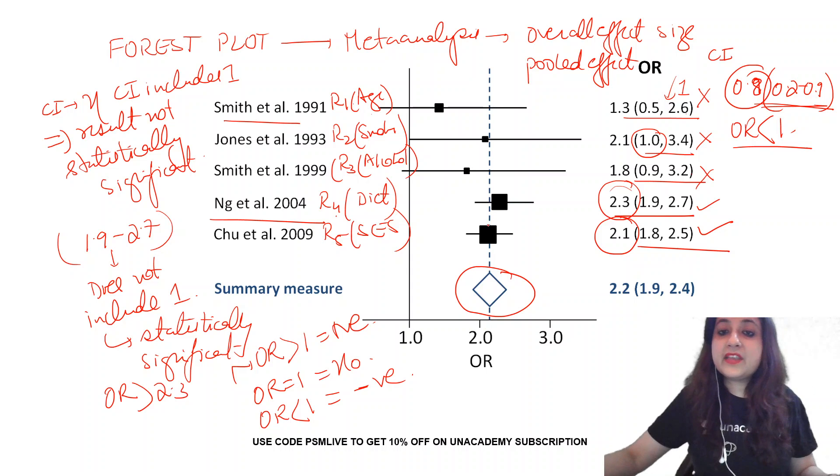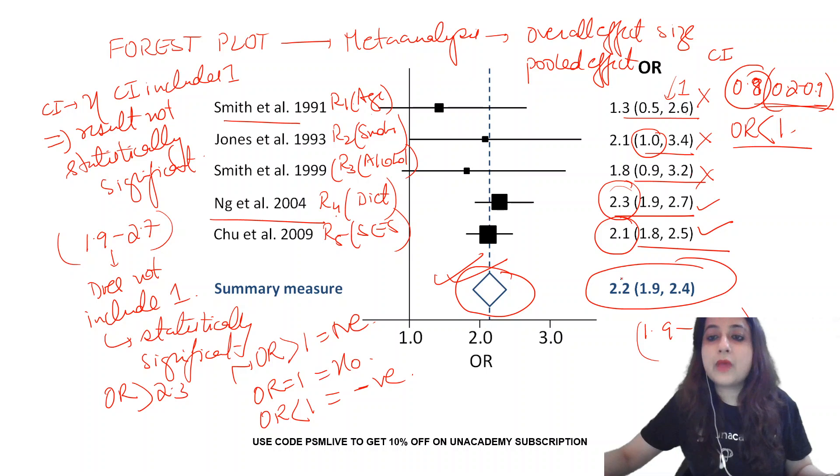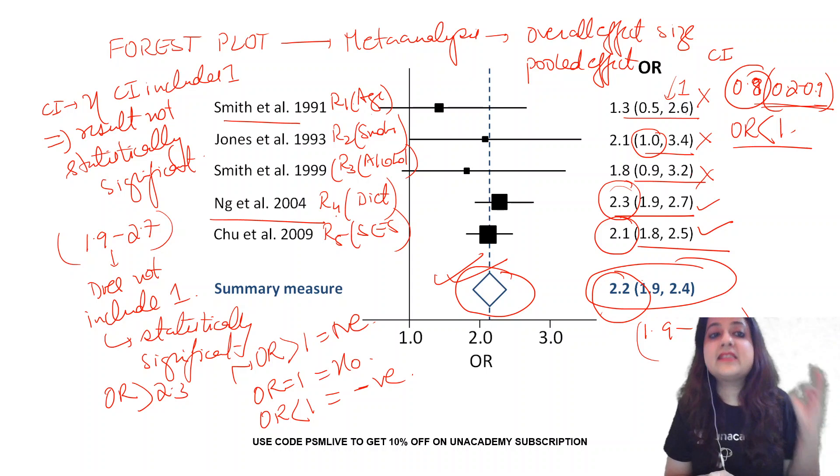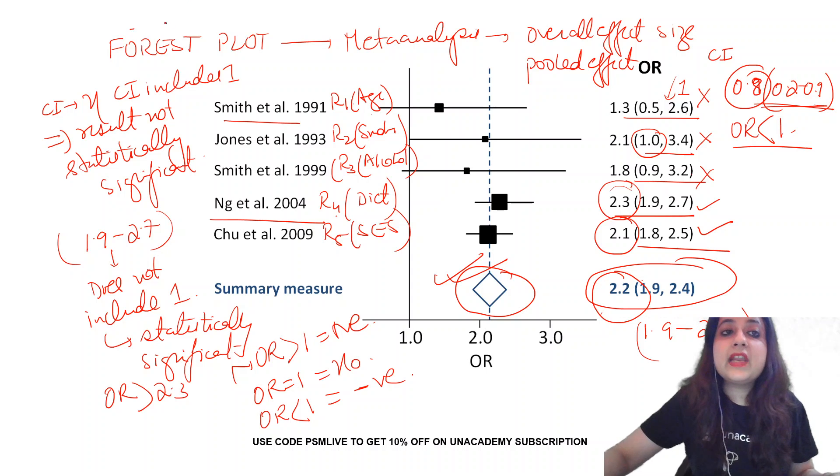Got it everyone? So over here, the overall effect of these risk factors on breast cancer is given by this diamond. If you look over here, is it statistically significant? Yes. Does not include 1 and this value is more than 2. So overall, the effect of these risk factors on breast cancer is statistically significant. Please remember, forest plot is not drawn for a systematic review. It is only drawn in case of a meta-analysis and the other name for this is a blobogram.